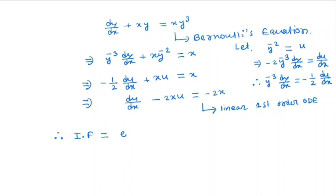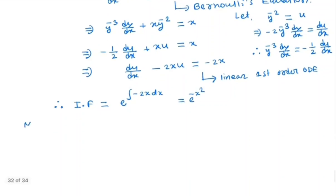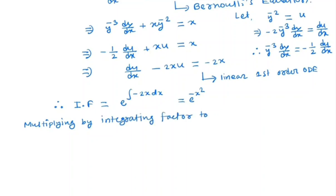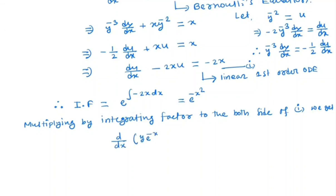The integrating factor is e to the power of the integral of minus 2x dx, which gives e to the power minus x². We then multiply both sides of the equation by this integrating factor.